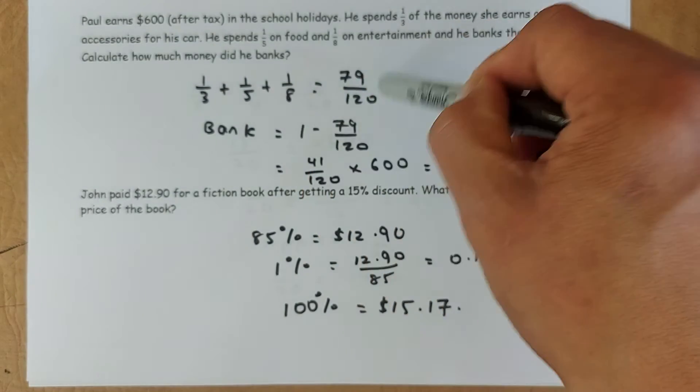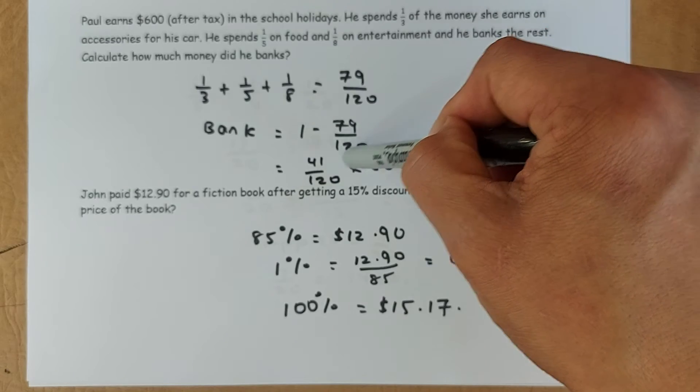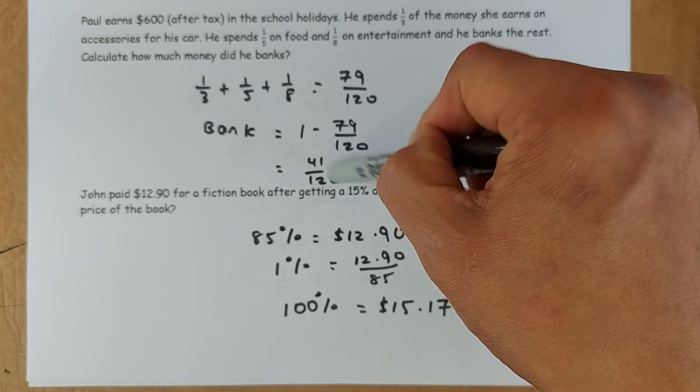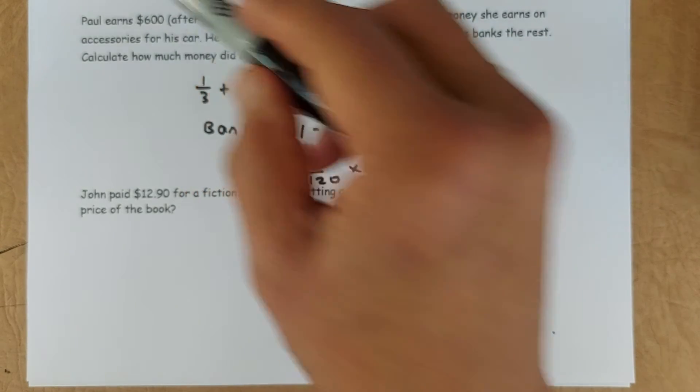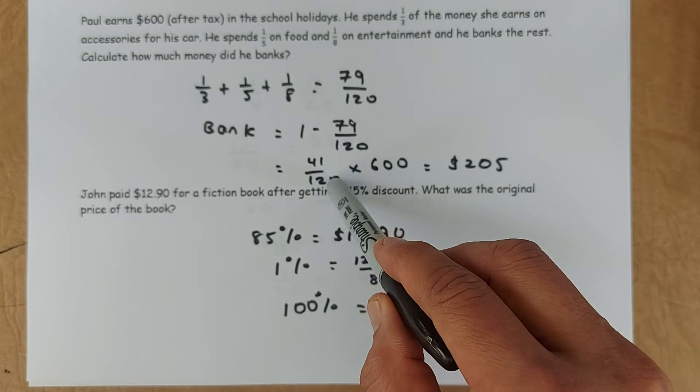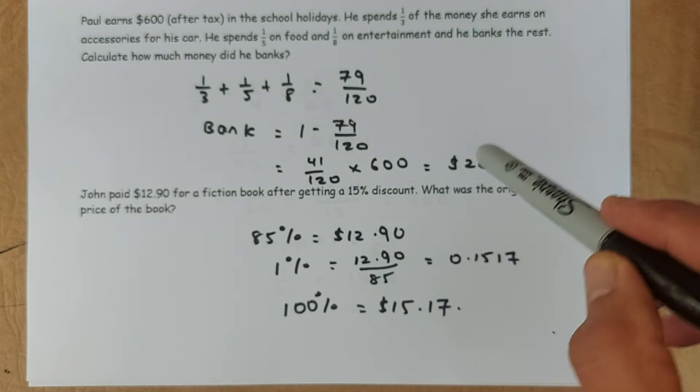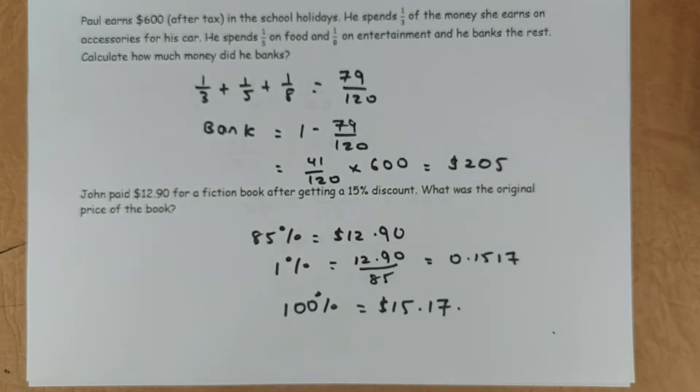So he banks the rest. So one minus this fraction will give you 41 over 120. And originally, if he has $600, so you can take 41 over 120 times 600. And that is the amount he banks that's $205.